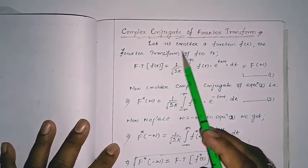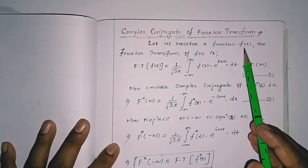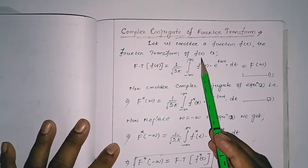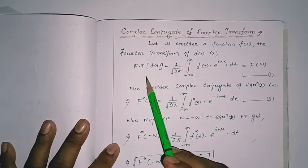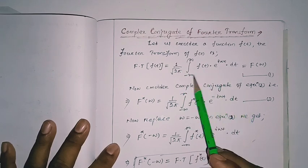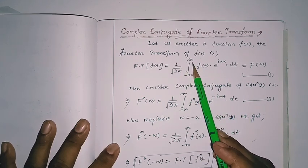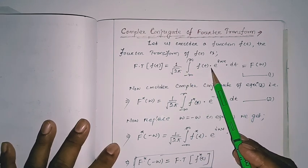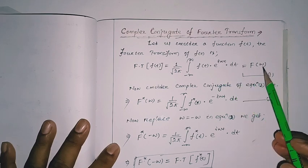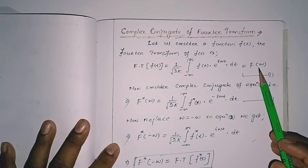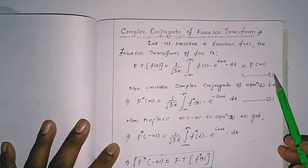First, we consider a function f which is a function of t. The Fourier transform of f(t) will be written as 1 over 2π times the integral from minus infinity to plus infinity of f(t) times e to the iωt dt, which is also represented as capital F of ω. Let this be equation number 1.